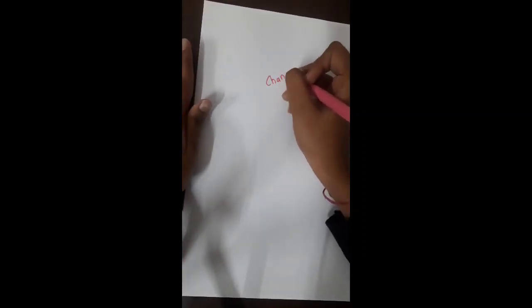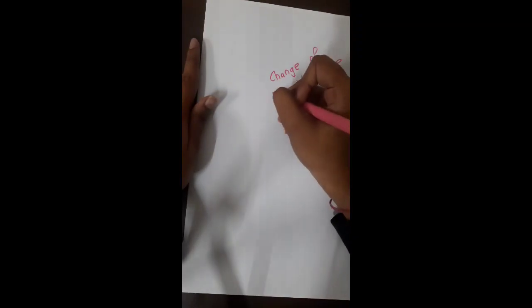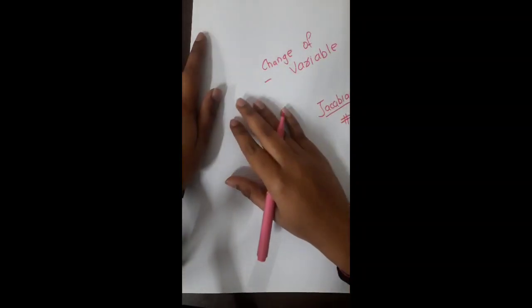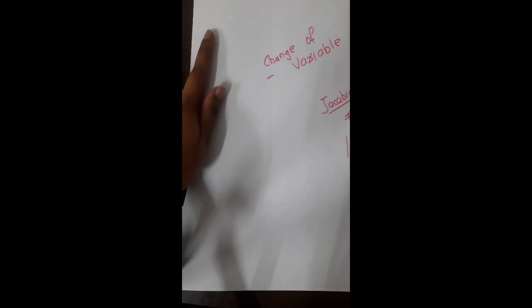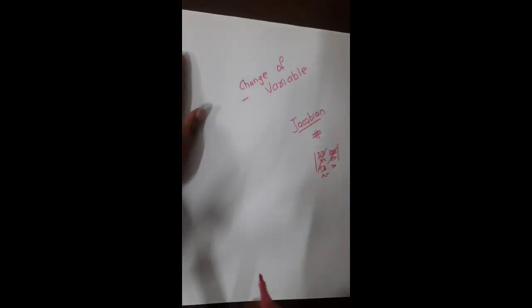Hello everyone. Now we'll be going on to the most important topic, that is change of variables. In change of variables there are basically two general cases that we need to keep in mind. Before doing that, I would like you to revisit the chapter where we have learned Jacobians. You must know how to find the Jacobian for this topic to be understood properly.